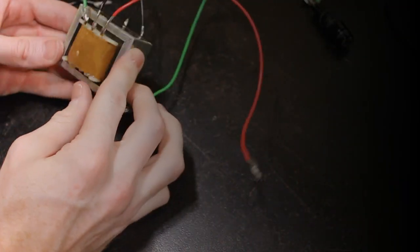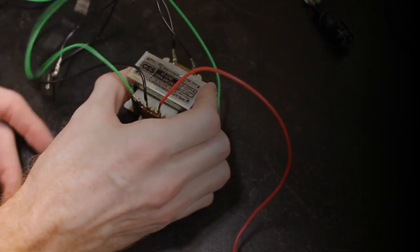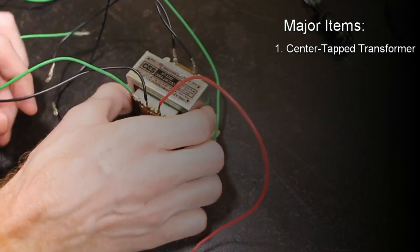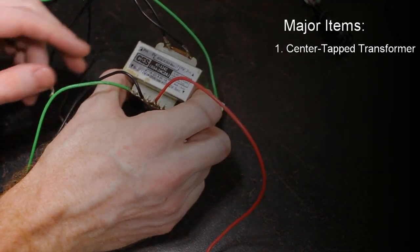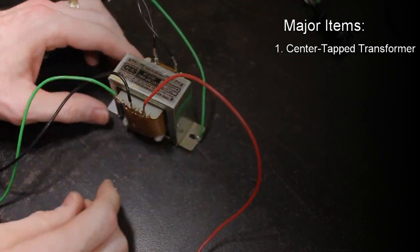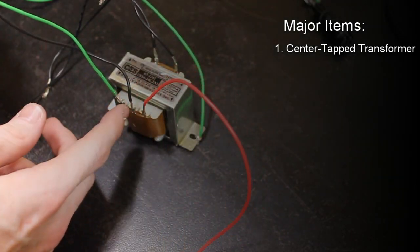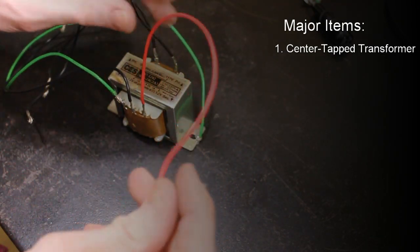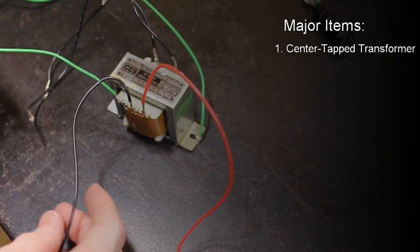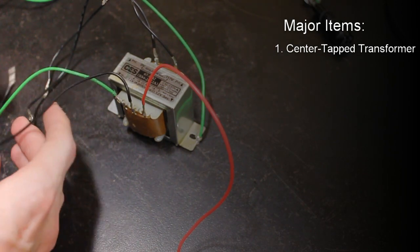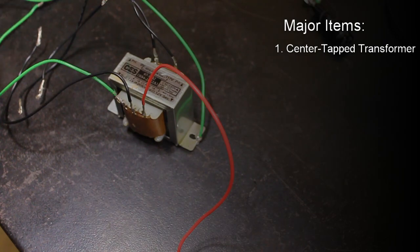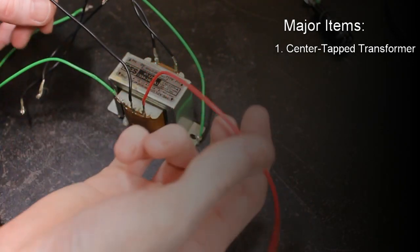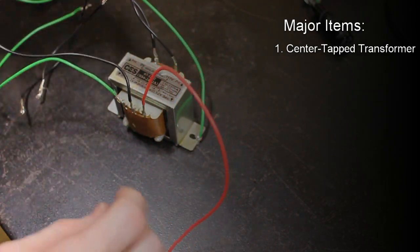We're gonna start off by going over our major components for this build. The first major component is our transformer. So this transformer is a 24 VAC transformer. You can see I've already attached the leads to each one of the connectors here. These are just 18 gauge wires. Pay no attention to the coloring. These are just wires that I had in my shop. If you want you can buy an assortment of different colors and wire this thing any way you want. But there's no rhyme or reason to the colors in this build.